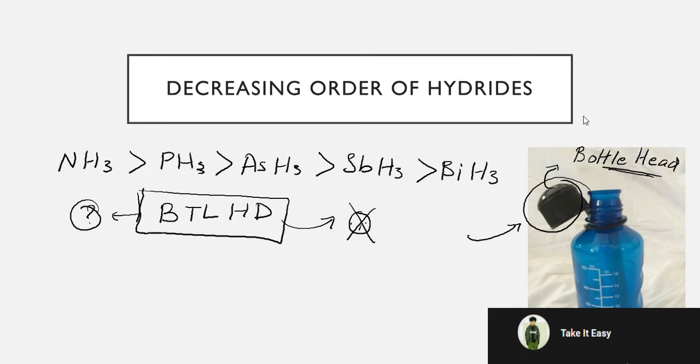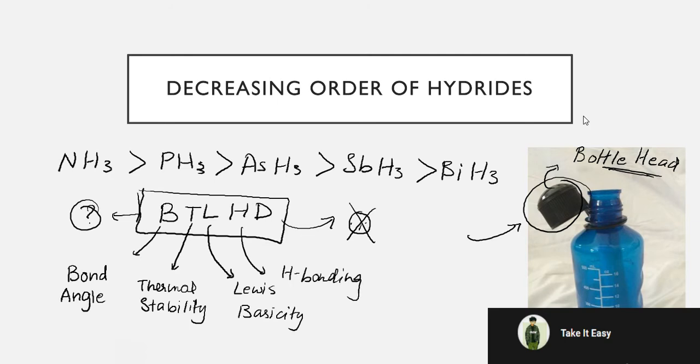Now what does this represent? This is a really important mnemonic for learning this decreasing order of hydrides. B stands for bond angle, T stands for thermal stability, L stands for Lewis basicity, H stands for hydrogen bonding, and D stands for dipole moment.